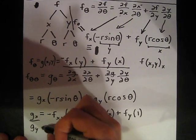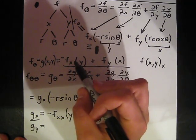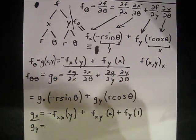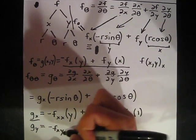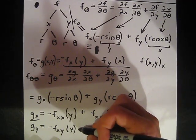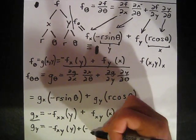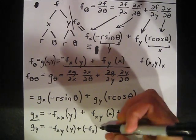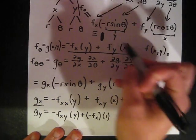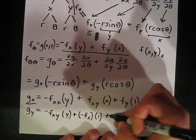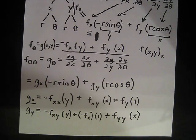For the second term, f sub y times x, the derivative with respect to y is f sub yy times x, since x is treated as a constant. So g sub y equals negative f sub xy times y, minus f sub x, plus f sub yy times x. Now that we have g sub x and g sub y, all we have to do is put it all together and simplify.